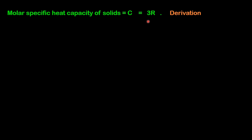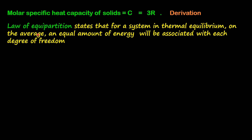Molar specific heat capacity is related to delta Q, but before deriving the expression, we need to find the relation of molar specific heat capacity with delta U. We need to know the Law of Equipartition of Energy. The law states that for a system in thermal equilibrium, on the average, an equal amount of energy will be associated with each degree of freedom.